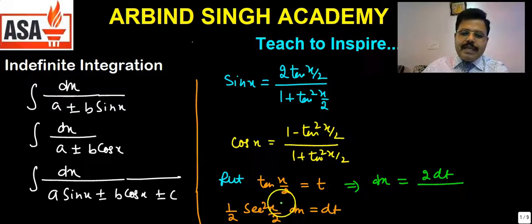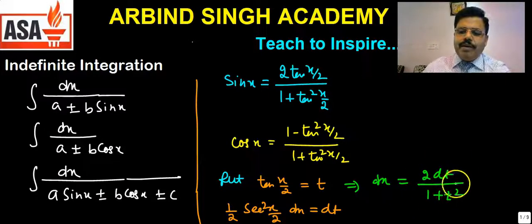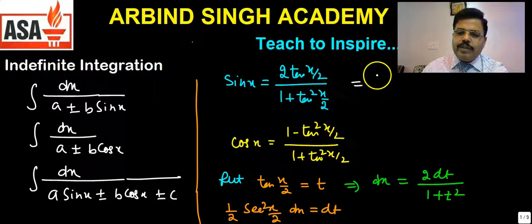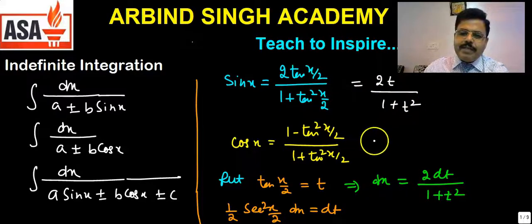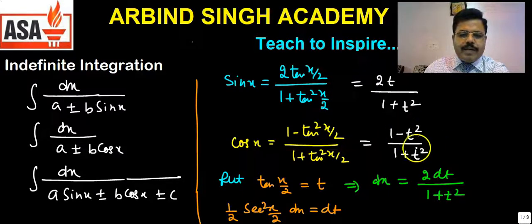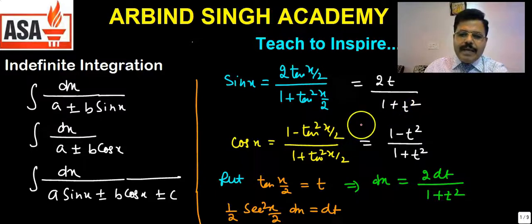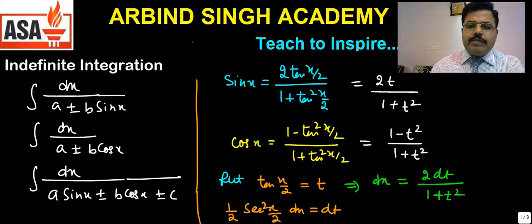So 1 + tan²(x/2) means 1 + t². Therefore, dx can directly be written as 2dt/(1 + t²). Moreover, sin x can be written as 2t/(1 + t²), and cos x can be written as (1 - t²)/(1 + t²). All these substitutions replace directly, and if there is any constant it will be multiplied by (1 + t²).